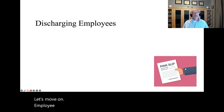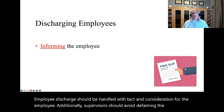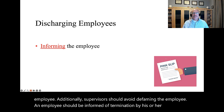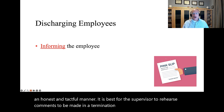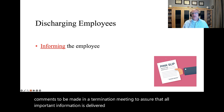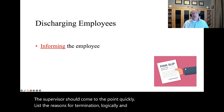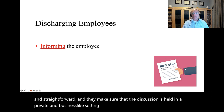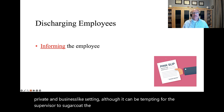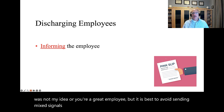Employee discharge should be handled with tact and consideration for the employee. Additionally, supervisors should avoid defaming the employee. An employee should be informed of termination by his or her supervisor in an honest and tactful manner. It is best for the supervisor to rehearse comments to be made in a termination meeting to assure that all important information is delivered effectively. In the termination meeting, the supervisor should come to the point quickly, list the reasons for termination logically and clearly, be firm and straightforward, and make sure that the discussion is held in a private and business-like setting. Although it can be tempting for the supervisor to sugarcoat the decision by making statements such as 'This was not my idea' or 'You're a great employee, but...', it is best to avoid sending mixed signals. The discussion should be brief, firm, and to the point.